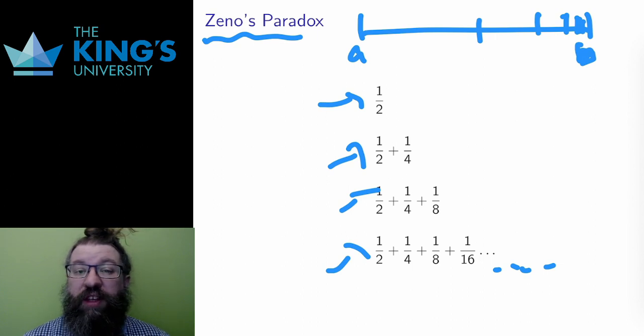Since doing an infinite number of things is not humanly possible, you will never be able to reach B. And finally, this holds for any two points A and B. Therefore, movement is impossible.